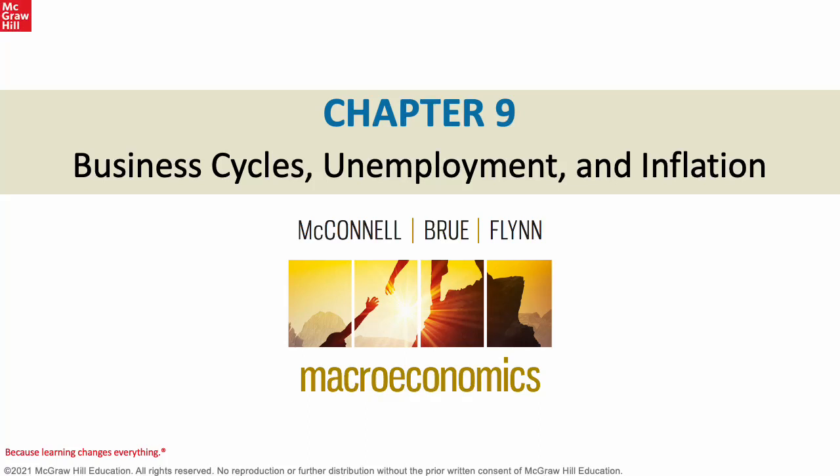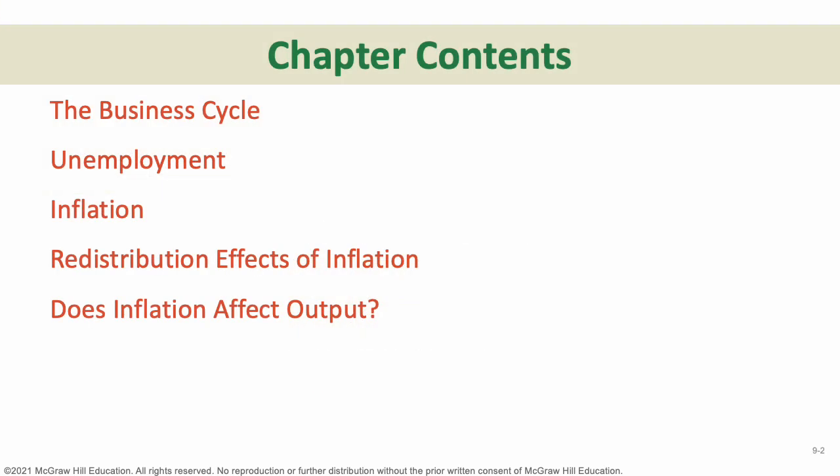Hello everybody, and welcome to Chapter 9. In Chapter 9, we're going to look more at business cycles, what unemployment is in an economic sense, and finally inflation. This is going to be some very pertinent stuff to what you've been seeing lately on the news pertaining to unemployment and inflation numbers, and we're going to go through how all of this is computed and looked at economically. We'll look at what is known as a business cycle, what unemployment is and how it's considered in an economic sense, inflation and its effects, the downsides of inflation, and finally whether inflation affects output.